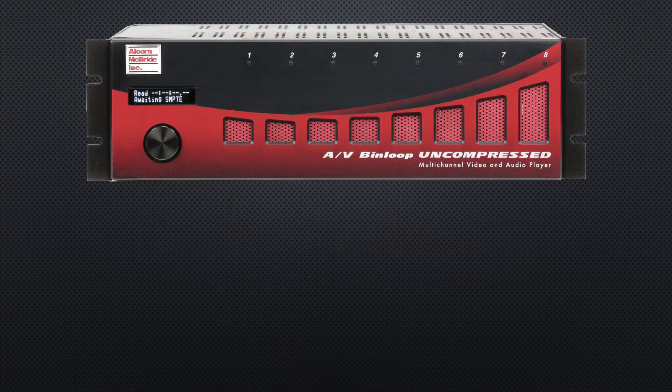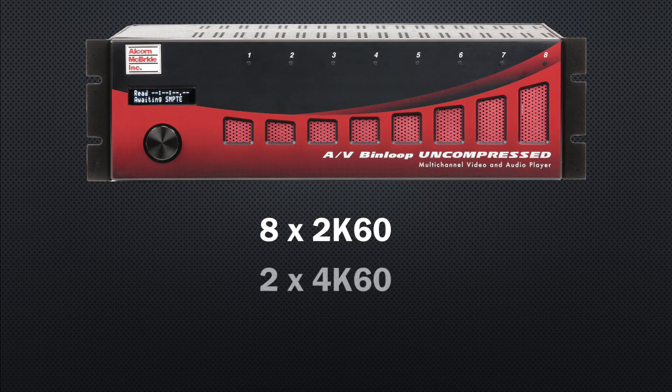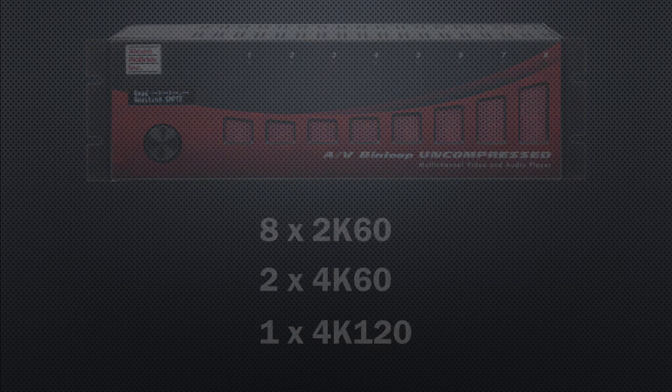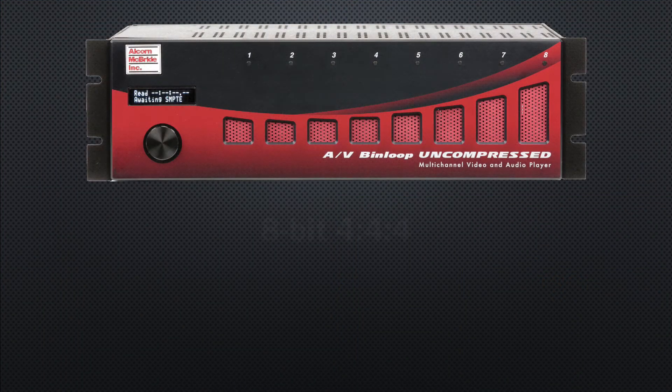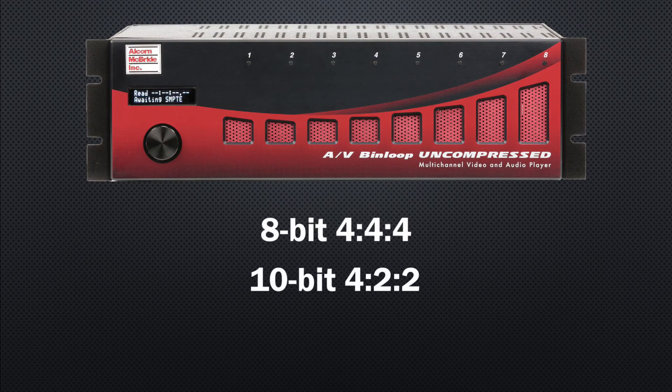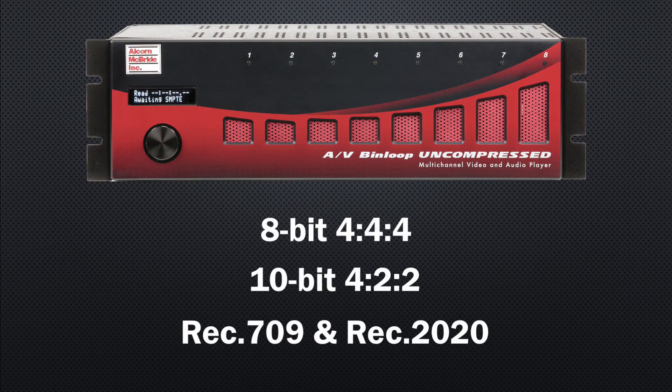I know what you're thinking — you keep saying the video quality is stunning, but my technically illiterate aunt says the same thing about the videos she posts on Facebook from her crappy flip phone. Point taken. A single AVbin Loop Uncompressed unit can provide up to eight channels of 2K60 playback, up to two channels of 4K60, or a single channel of 4K120. Many resolutions are supported, including both true 4K and Ultra HD resolutions. We also support both 8-bit 4:4:4 and 10-bit 4:2:2 color depths with either the Rec. 709 or Rec. 2020 color standards.